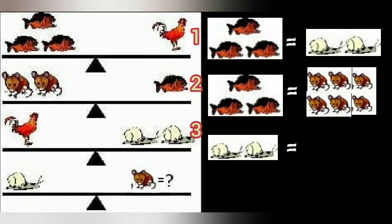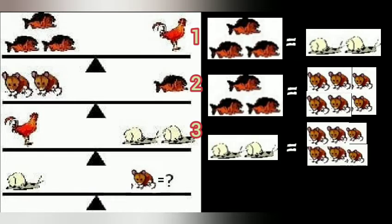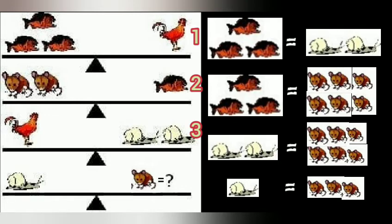Therefore, two snails will equal to six rats. Now the equation is very simple. If two snails is equal to six rats, then one snail will equal to three rats. So we find that the weight of one snail is three rats.